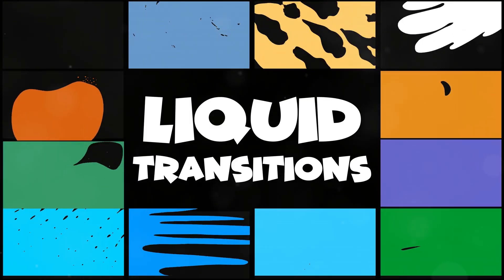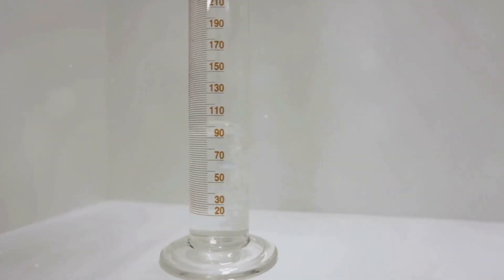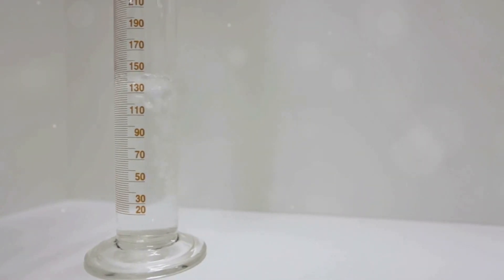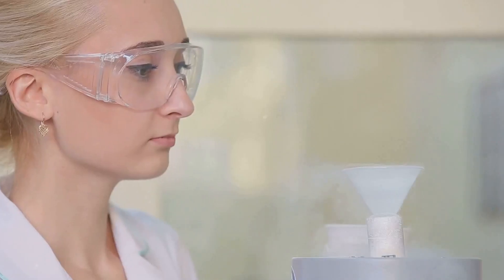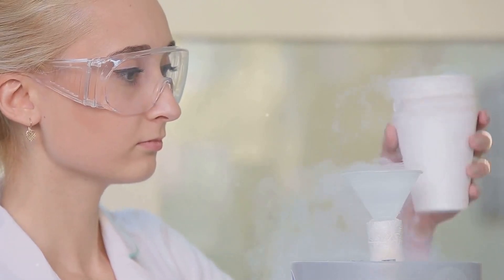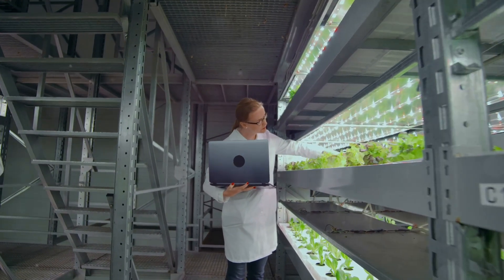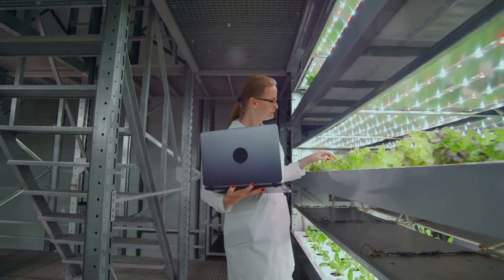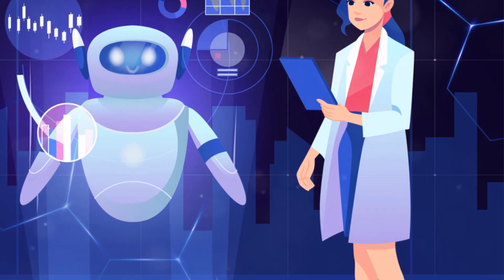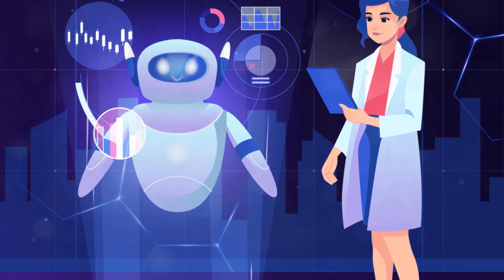But the metafluid's talents don't end there. This remarkable substance can also alter its mechanical behaviour, transitioning between states of matter with ease. It can behave like a typical Newtonian fluid, with a viscosity that changes only with temperature, or it can morph into a non-Newtonian fluid, where viscosity is influenced by applied force. This extraordinary level of control over a material's properties opens up a world of possibilities, allowing scientists to tailor metafluids for specific applications with unprecedented precision.